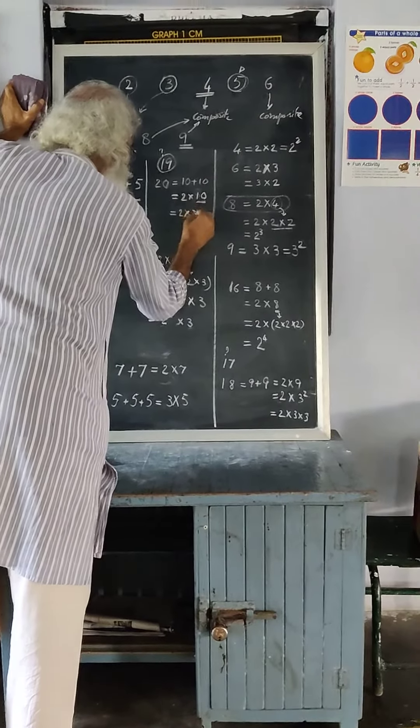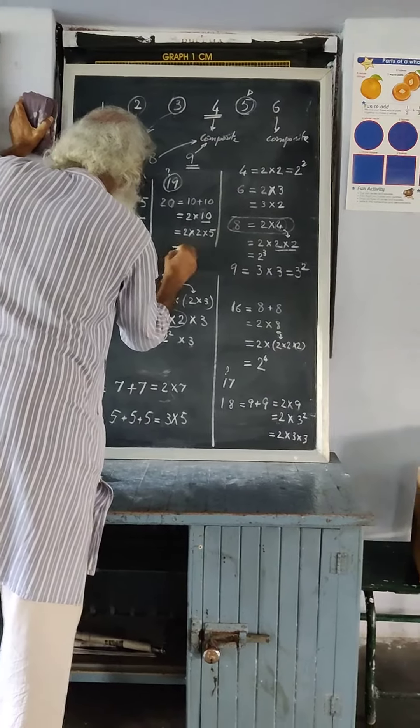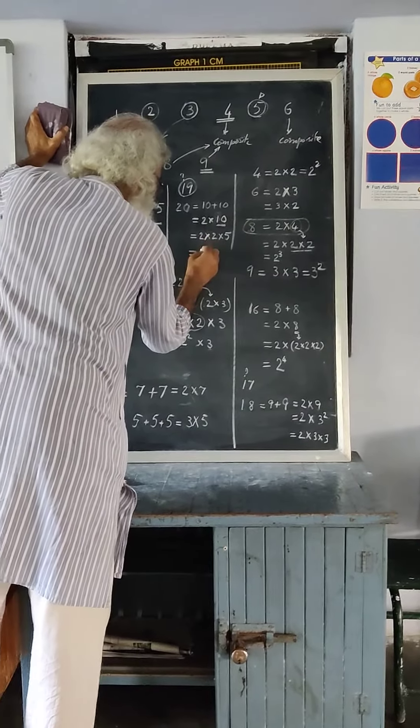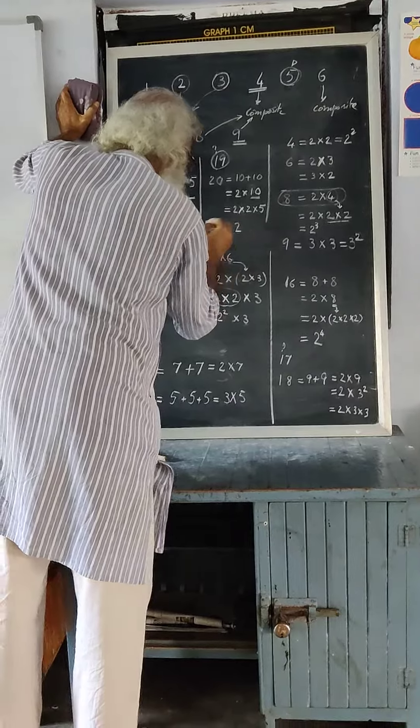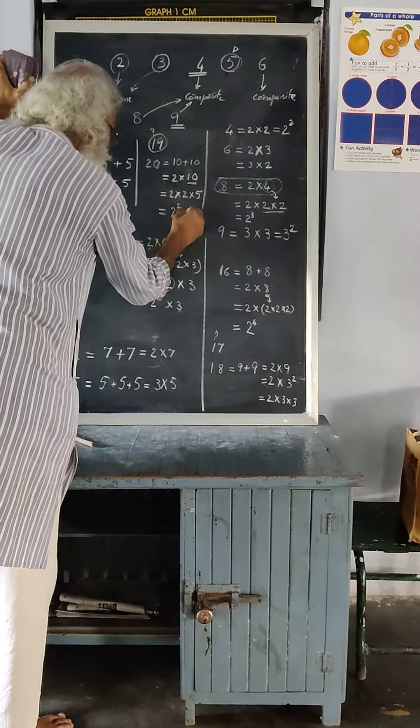So it is 2 times 5. If you write it in an interesting way, you can write 2 times 2, or 2 to the power of 2. 2 to the power of 2 times 5.